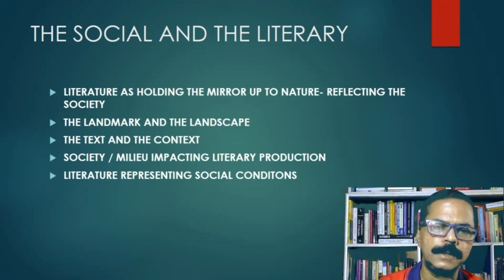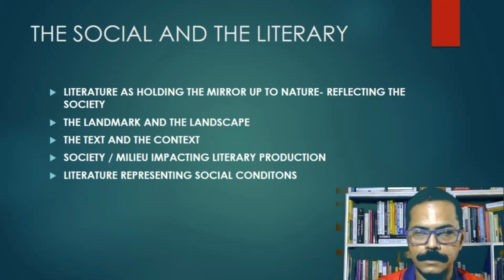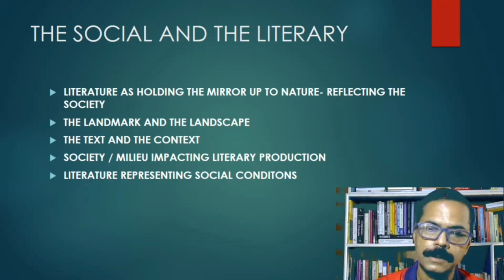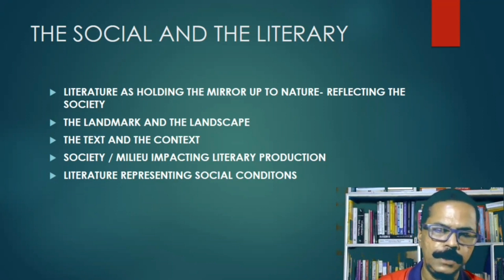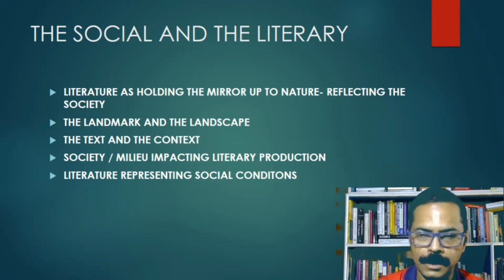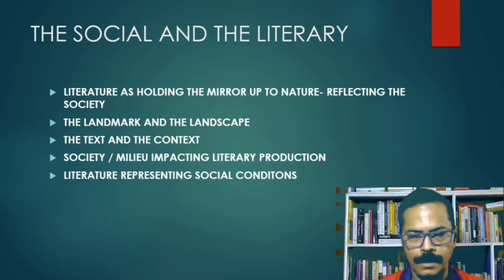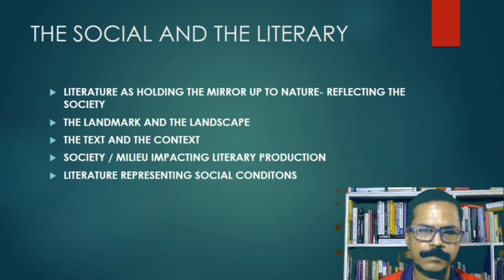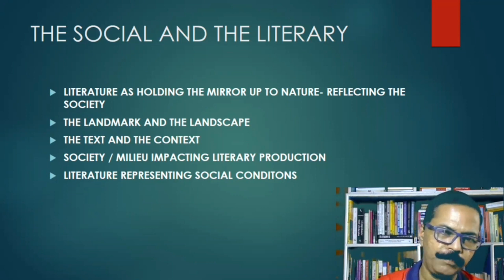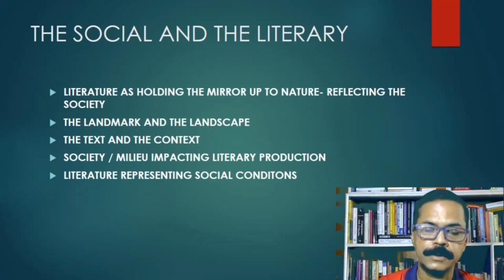Society and literature are connected. Literature is supposed to hold up the mirror to nature — that is, literature reflects the society. It represents the society it is born out of. We can use the words 'landmark' and 'landscape': the text is the landmark and the environment, the society, is the landscape. There is a two-way traffic between the text and the context. Society impacts literary productions, and literary texts reflect the society in which they are produced.